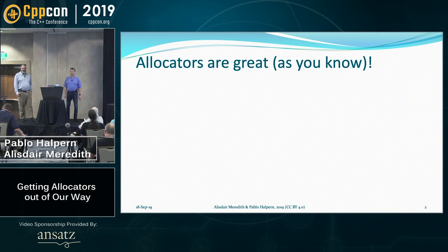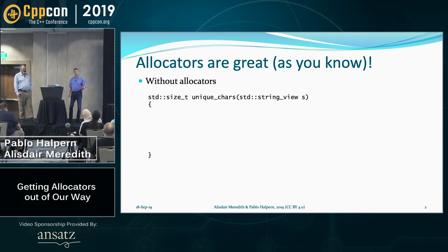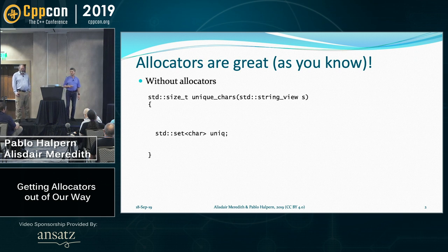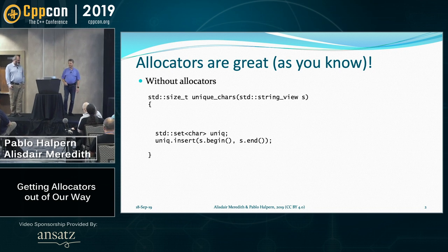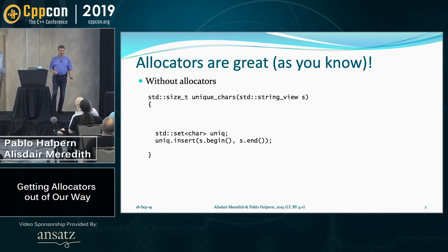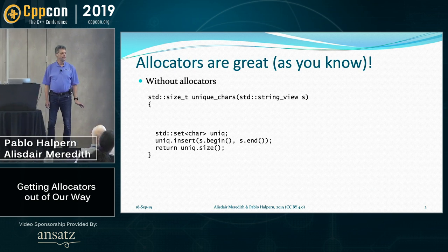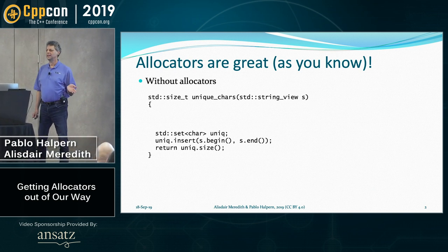I'm going to jump right into it. Allocators, as you know, are great. Without allocators, we're going to do this very simple little algorithm for counting the number of unique characters in a string. So we start with a set of unique characters, we insert all the characters from the string into the set, only the unique ones will get inserted, and we return the number of characters. Simple enough?